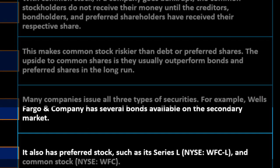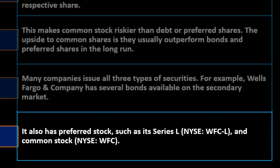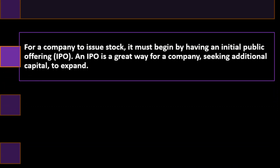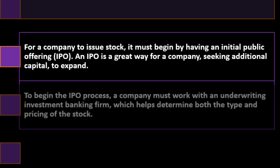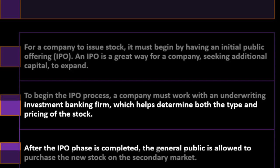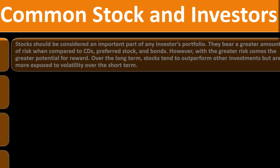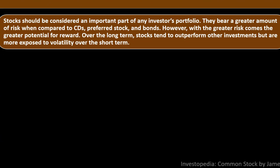Many companies issue all three types of securities. For example, Wells Fargo has several bonds available on the secondary market, preferred stock such as its WFC-L on the NYSE, and common stock WFC. For a company to issue stock it must begin with an initial public offering (IPO). An IPO requires working with an underwriting investment banking firm to determine the type and pricing of the stock. After the IPO, the general public can purchase the new stock on the secondary market.